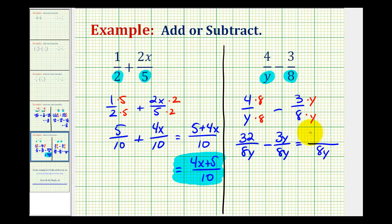And 32 and 3y are not like terms, so we just have 32 minus 3y, which is the difference of these two fractions.